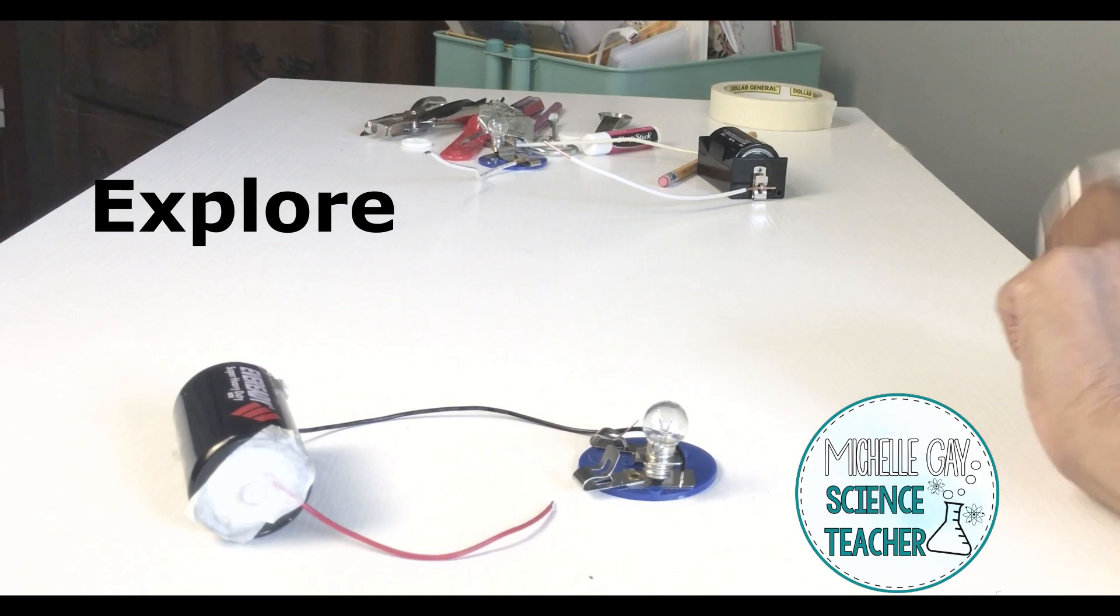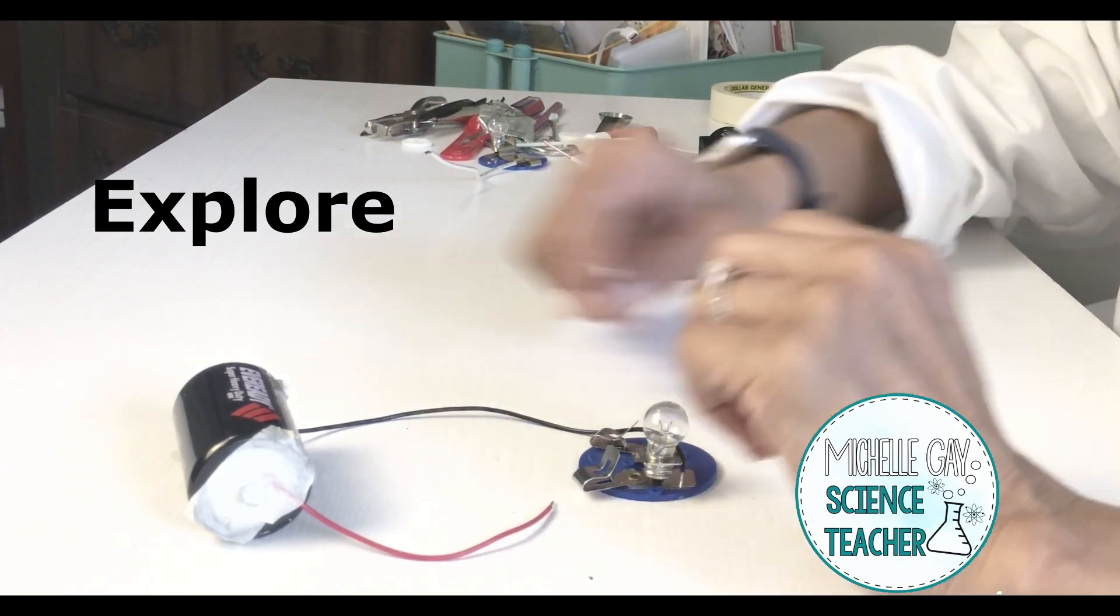We're going to make a circuit first. Safety is really important when we're doing experiments so in this particular experiment please be careful when touching the wires against other metal because it becomes hot. Also don't put your fingers on the wire once you have your circuit made.